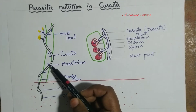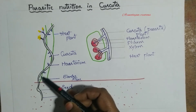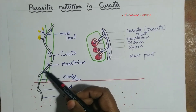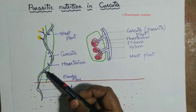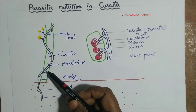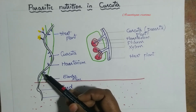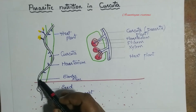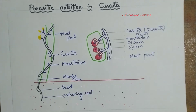This is the dodder plant — this is the Cuscuta stem. It is very slender and thin, with string-like stems. The stem is yellow, orange, pink, or brown in colour — not green, because chlorophyll is absent.